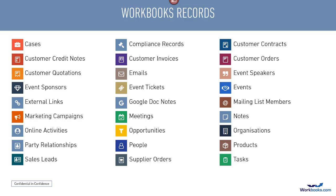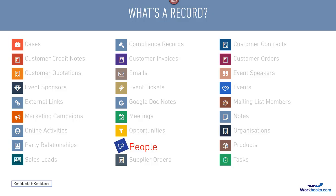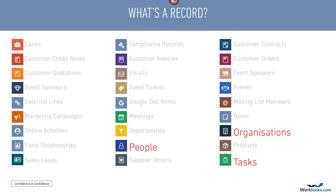This series of tutorials focuses on three commonly used record types: people records for the people that you contact and do business with, the organisations employing those people, and also activities or tasks — things that you need to do in connection with pursuing business with those people and organisations. Remember though, in your day to day job you'll probably use many more of the different record types that we provide.